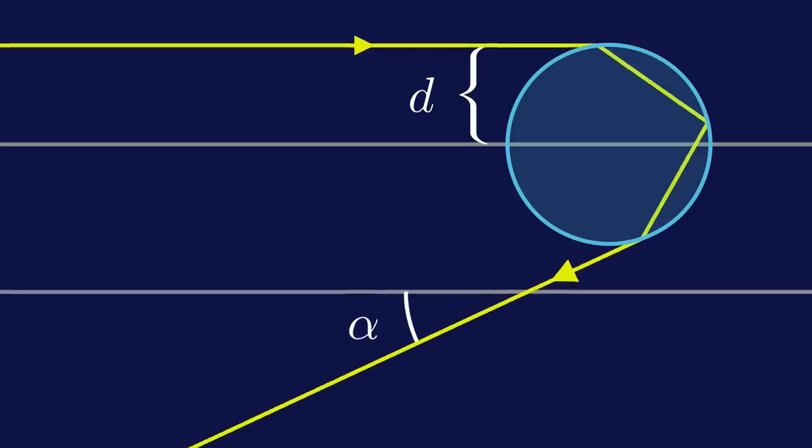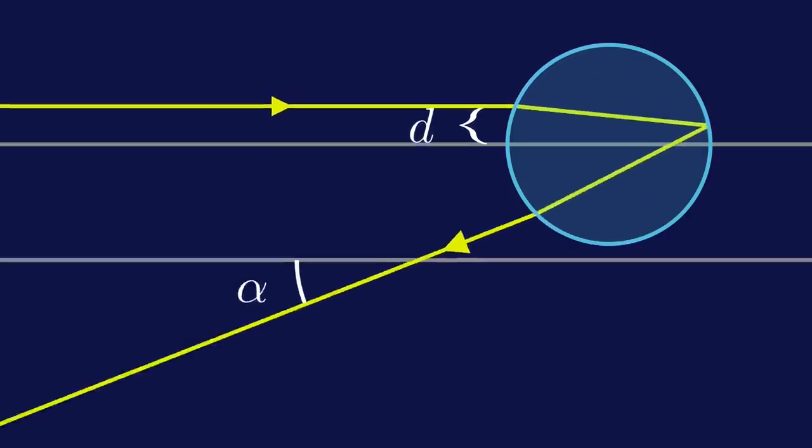The angle, which is called alpha here, depends on the distance, d, from the center.